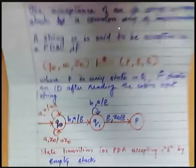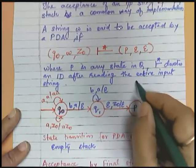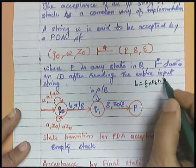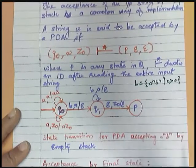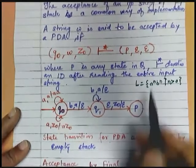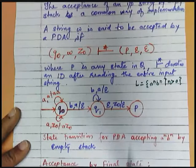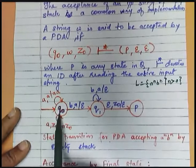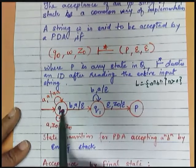We have seen one example in which we have solved the problem of language a^n b^n where n is greater than zero. This is a transition graph of a PDA representing this language.